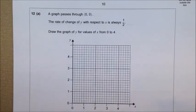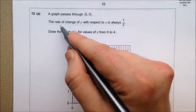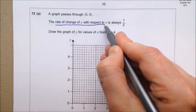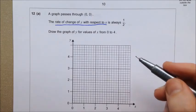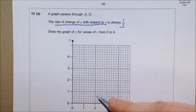Well, the wording is a bit puzzling on this, but it really isn't that difficult. What this means, the rate of change of y with respect to x, that means that as x goes up 1, y goes up half as much. So that would be 0.5.